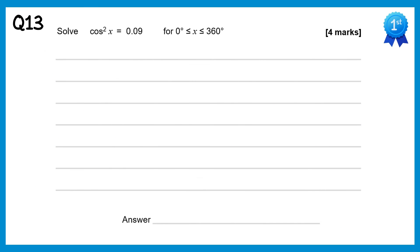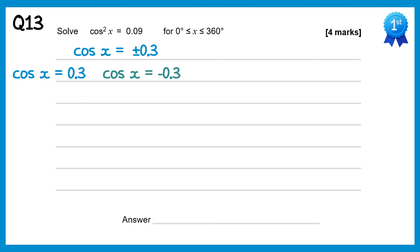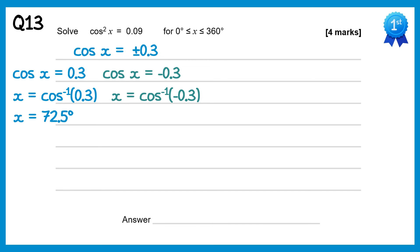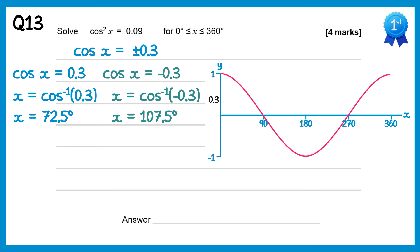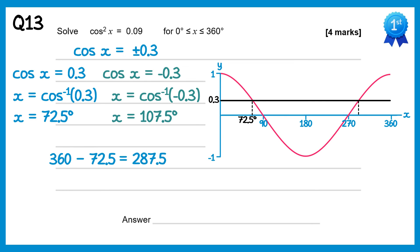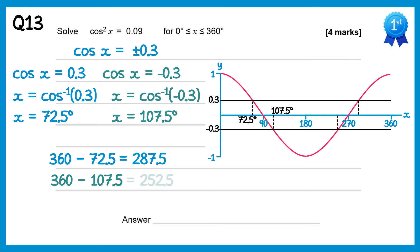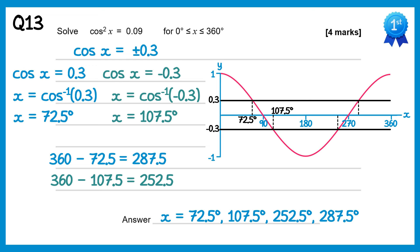For this question we square root both sides: the left gives cos x, and the right gives plus or minus 0.3. We split into two equations: cos x equals 0.3 and cos x equals negative 0.3. Inverse cos of 0.3 is 72.5, and inverse cos of negative 0.3 is 107.5. Using the graph, drawing a line at 0.3 shows 72.5 and, by symmetry, 360 take away 72.5 is 287.5. Drawing the line at negative 0.3 gives 107.5 and 360 take away 107.5 is 252.5. So there are four solutions in ascending order: 72.5, 107.5, 252.5 and 287.5.